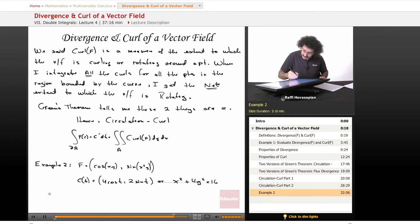We found the curl already. The curl of f, we found it already. That's equal to 2xy cosine of x squared y plus x times the sine of xy.